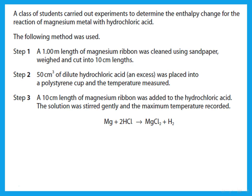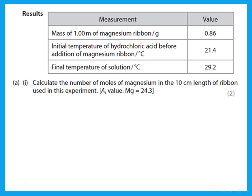A class of students carried out experiments to determine the enthalpy change for the reaction of magnesium metal with hydrochloric acid. One meter length of magnesium ribbon was cleaned using sandpaper, weighed, and cut into 10 cm lengths. 50 cm³ of dilute hydrochloric acid (in excess) was placed in a polystyrene cup. The temperature was measured, a 10 cm length of magnesium ribbon was added to the acid, the solution was stirred gently, and the maximum temperature recorded.